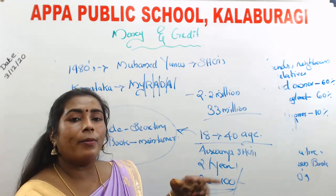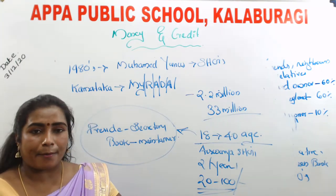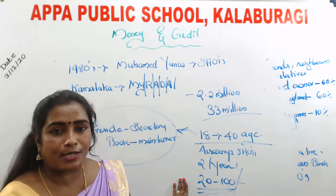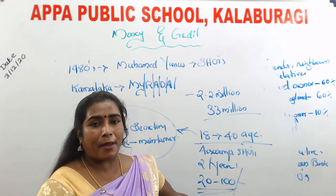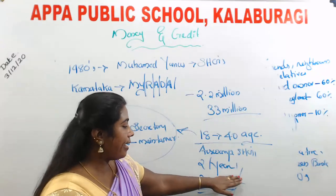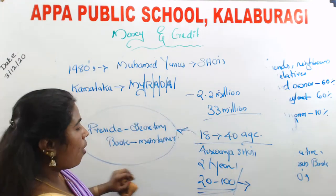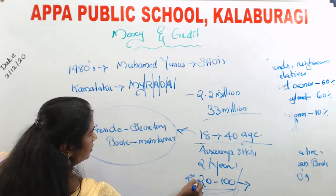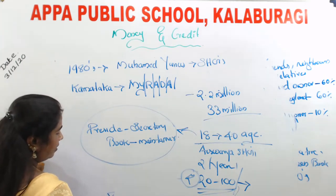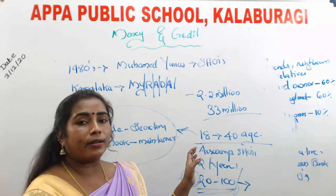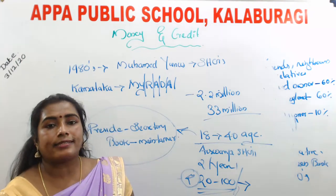The SHG manages decisions on when to meet, how much money to collect, and what terms and conditions to apply when giving credit to members. After 2 to 3 years of successful operation, when they have collected a good amount, the president and secretary go to the bank with the registered name and collected savings as collateral to request a loan. The bank provides the loan to the SHG, not to individuals, but members can distribute it among themselves for their purposes.